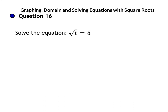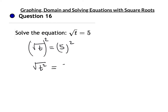Question 16 is a quick one. The square root of t equals 5. We're going to solve for t. To get rid of a square root, we square both sides — the square root and the square cancel out, giving t equals 25.